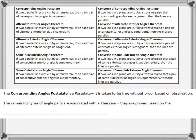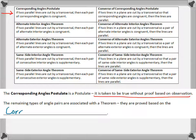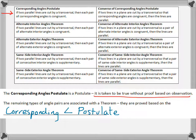The first one, which is a postulate, is the corresponding angles postulate. As a postulate, it is taken to be true without proof based on observation. This is simply because corresponding angles are just a translation away from each other — you can easily see by sliding one angle down that it matches up with the other one. Then all the other types of angle pairs are associated with theorems, proved based on the corresponding angle postulate.